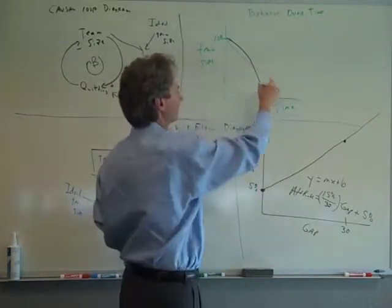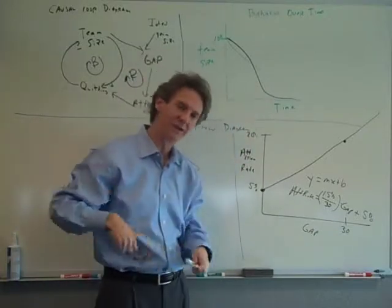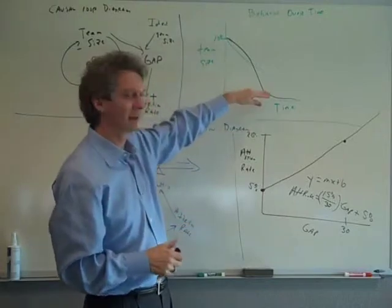Then it just kind of crashes. So it looked more like that where you have an aggressive, you start out okay, but then an aggressive crash once the gap starts increasing. That attrition rate keeps going up.